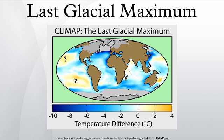At this time, vast ice sheets covered much of North America, Northern Europe and Asia. These ice sheets profoundly affected Earth's climate, causing drought, desertification, and a dramatic drop in sea levels. It was followed by the late glacial maximum.